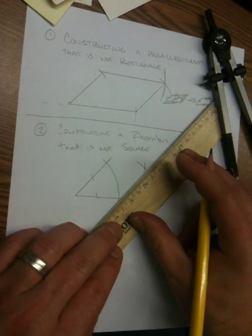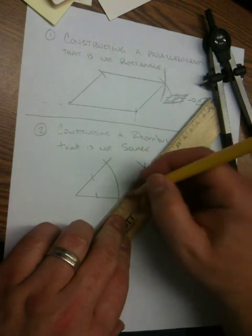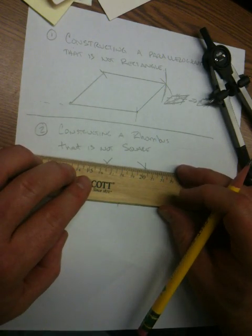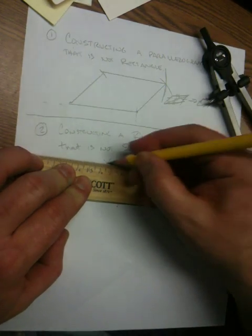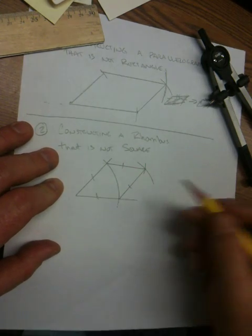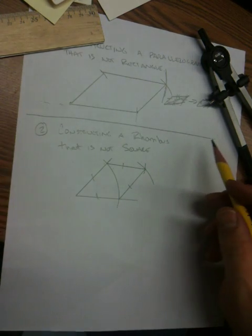This coordinate when connected to my first point of intersection and my second point of intersection produces a shape all of which have the same length side, thus a rhombus.